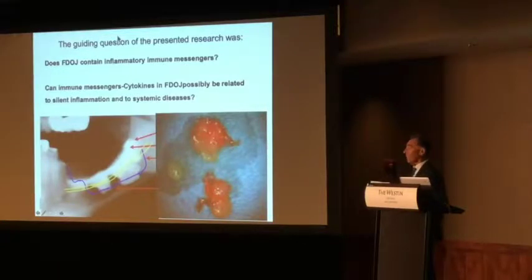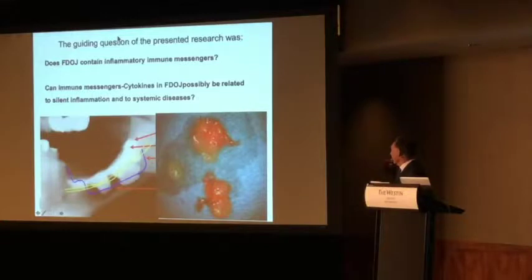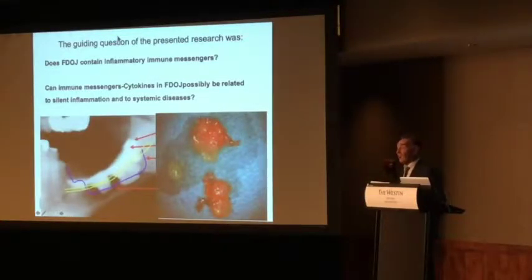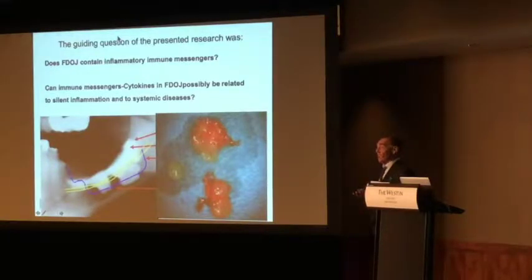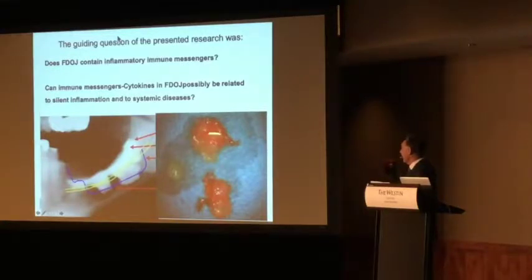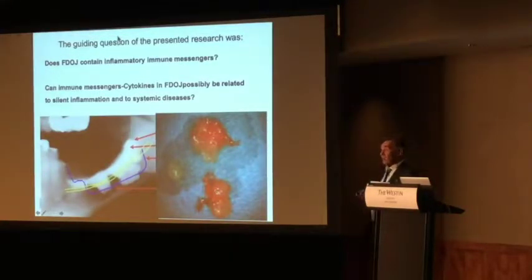The question was: when we go for these fatty lumps and analyze them, are there eventually immune messengers housed or concentrated in these fatty lumps? Modern laboratory techniques are very useful for this.